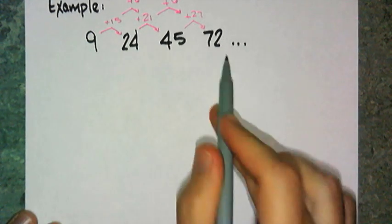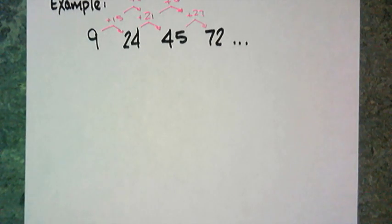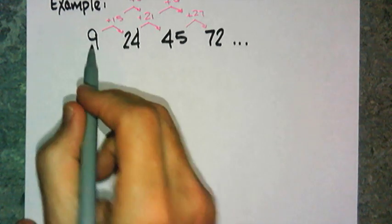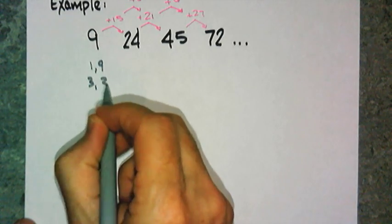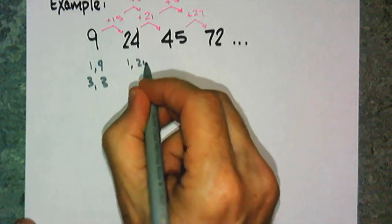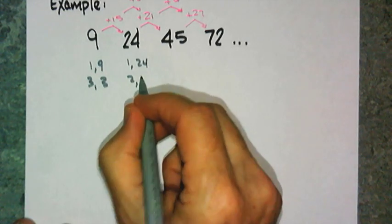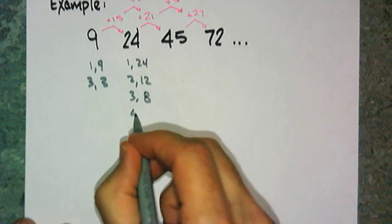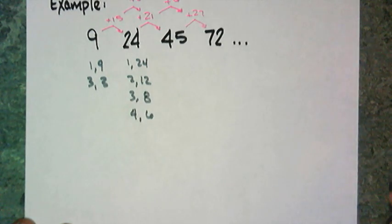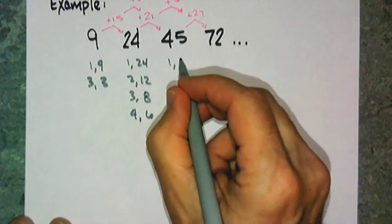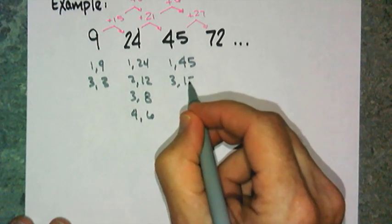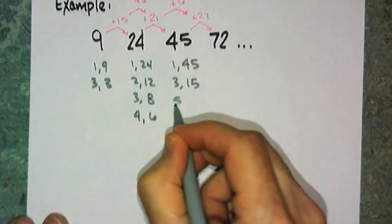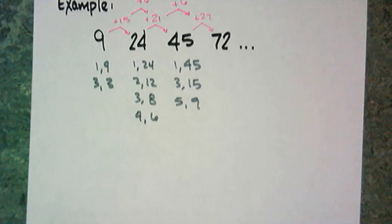These are the numbers. Now, I need to figure out the dimensions of the rectangle. To find the dimensions, I have to start factoring my values. So, for 9, it could be 1 and 9, or 3 and 3. 24 is 1 and 24, 2 and 12, 3 and 8, 4 and 6. 45: 1 and 45, 3 and 15, 5 and 9.